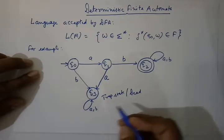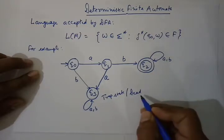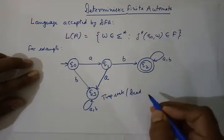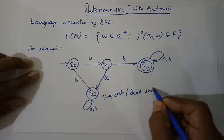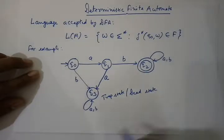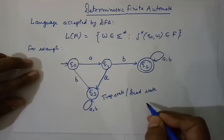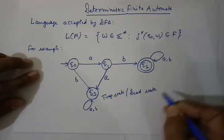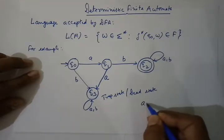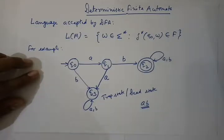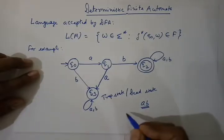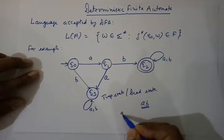Q3 is the trap state or dead state, meaning once we come to Q3 we cannot go out, so the chance to reach the final state is gone. Now we take a string, for example AB — is it accepted by our DFA?